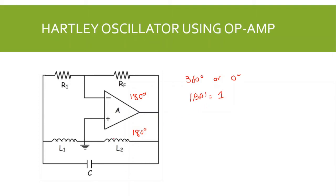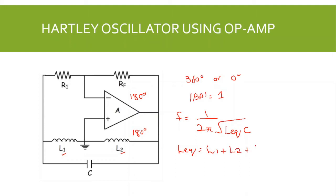This satisfies the Barkhausen criteria and produces sustained oscillations. The frequency of this oscillator is determined by the reactive elements L1, L2, and C, and is given by: f = 1 / (2π √(L_eq × C)), where L_eq = L1 + L2 + 2M. Here, 2M accounts for the mutual coupling between the two inductors. The oscillator frequency is thus set by the LC tank circuit comprising L1, L2, and C.